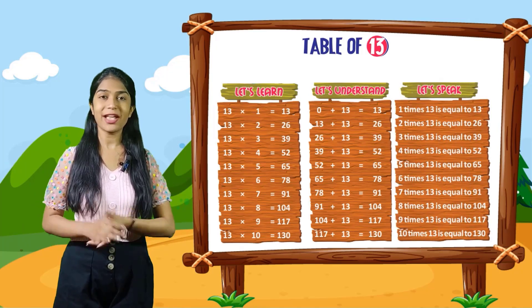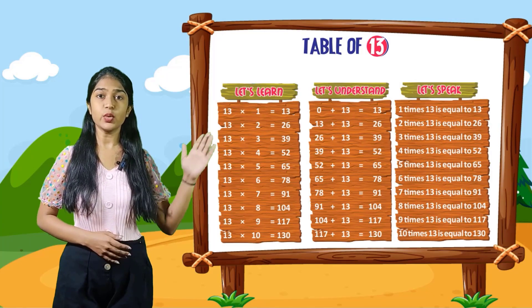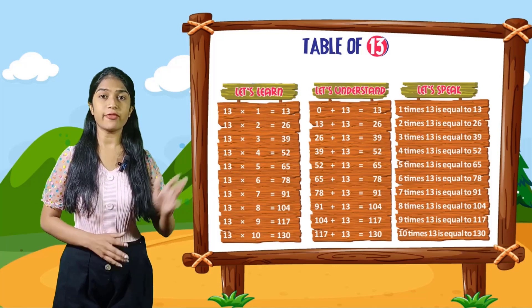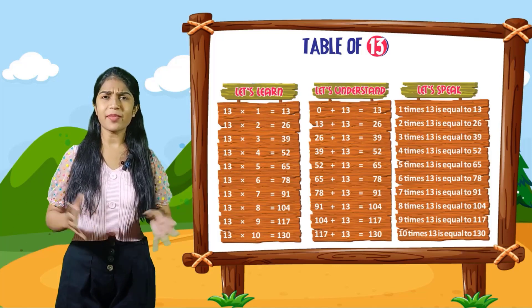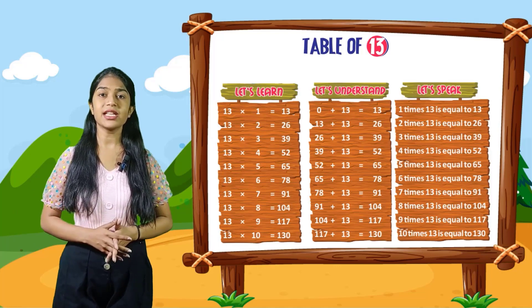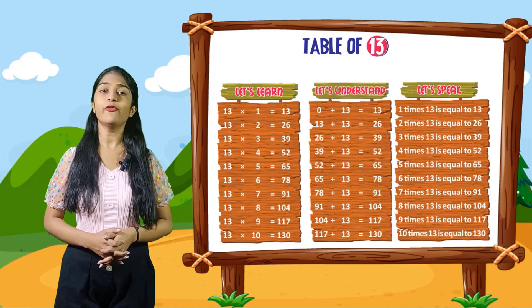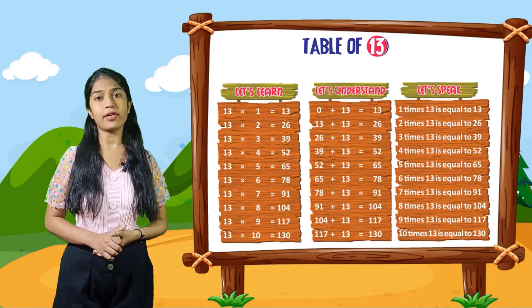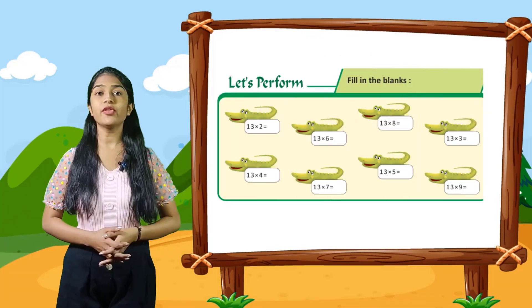So now let's speak. You have to speak out with me. 1 times 13 is equal to 13. 2 times 13 is equal to 26. 3 times 13 is equal to 39. 4 times 13 is equal to 52. 5 times 13 is equal to 65. 7 times 13 is equal to 91. 8 times 13 is equal to 104. 9 times 13 is equal to 117. 10 times 13 is equal to 130.